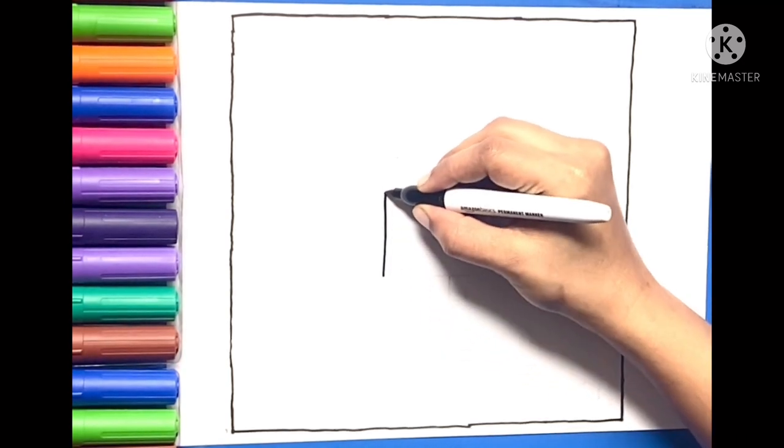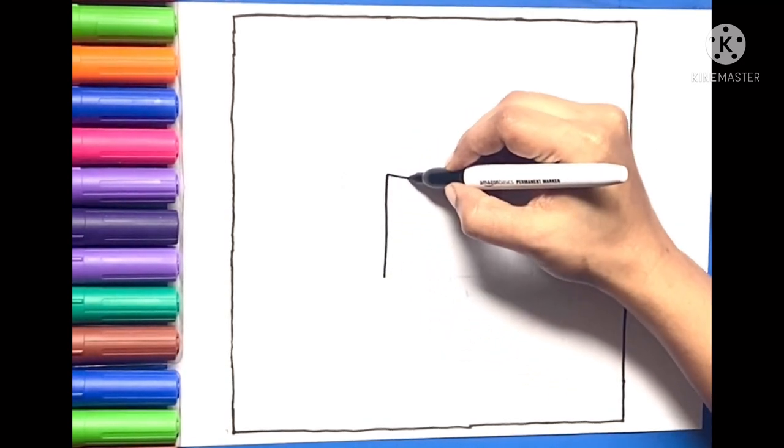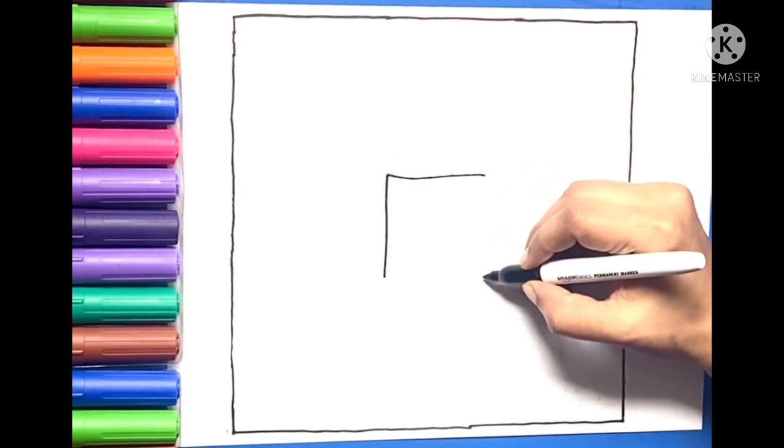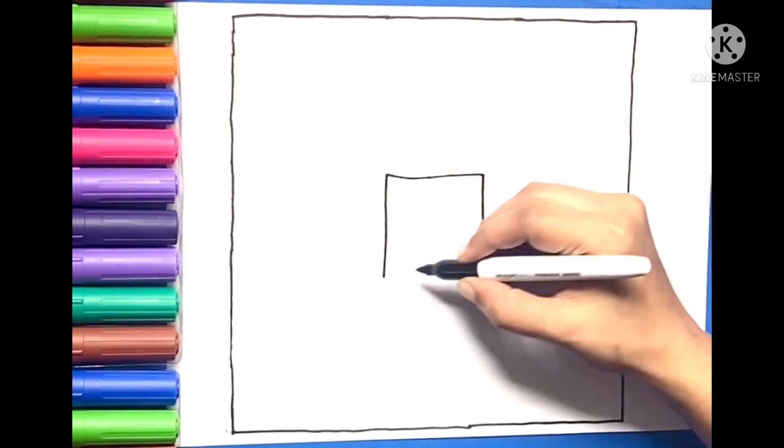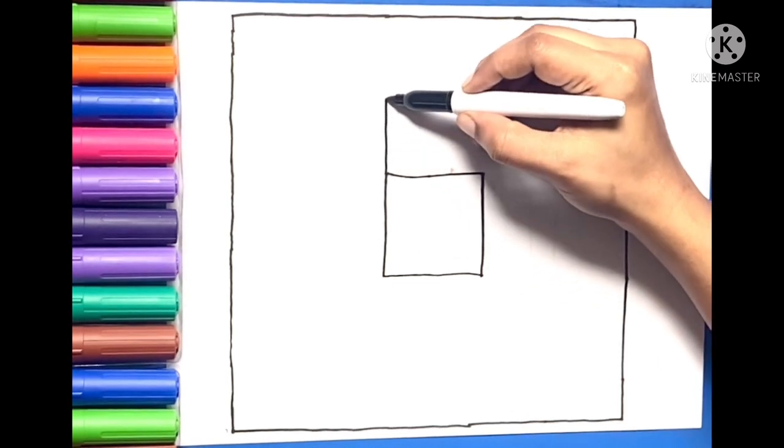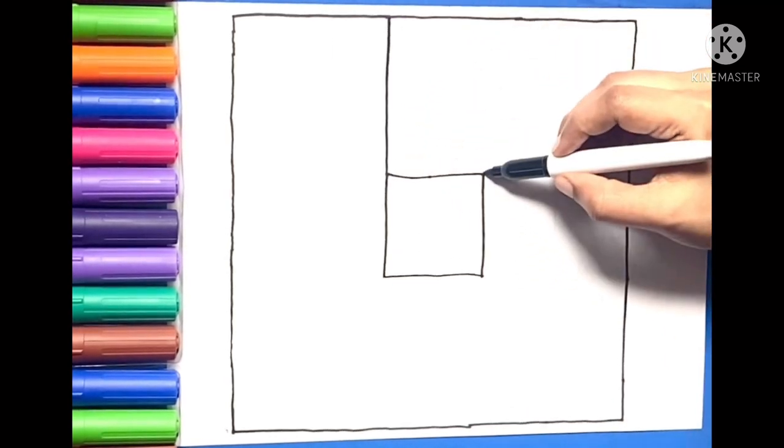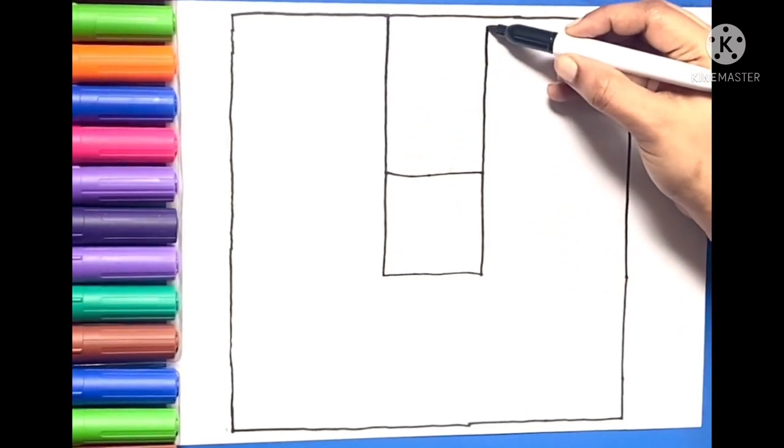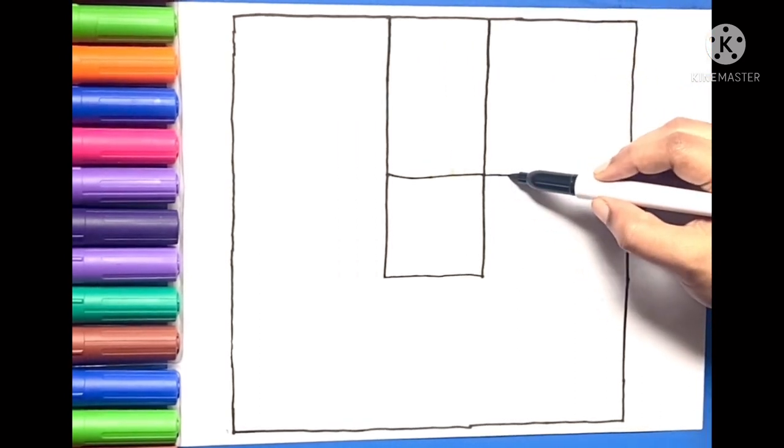Now we are going to draw small square boxes just by using sleeping and standing lines. Draw two straight standing lines on top side of the square. Draw two sleeping lines parallel on right side of the square.